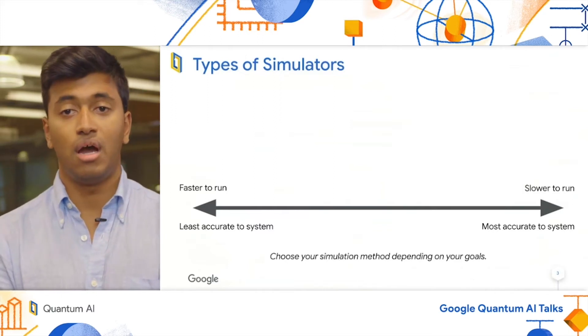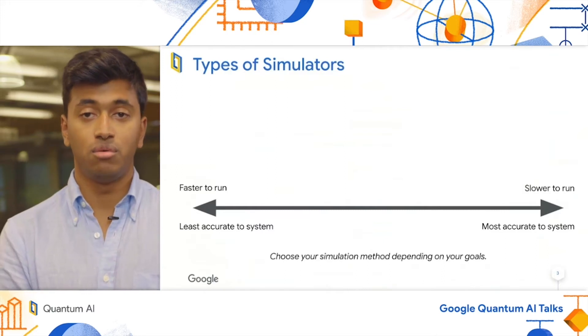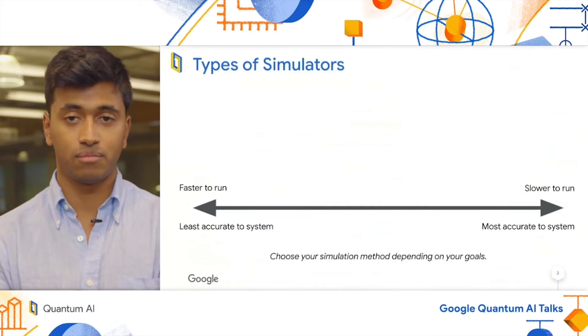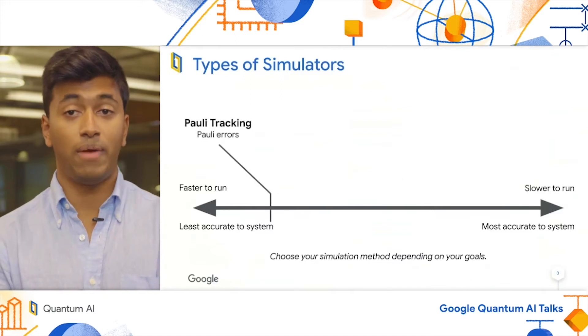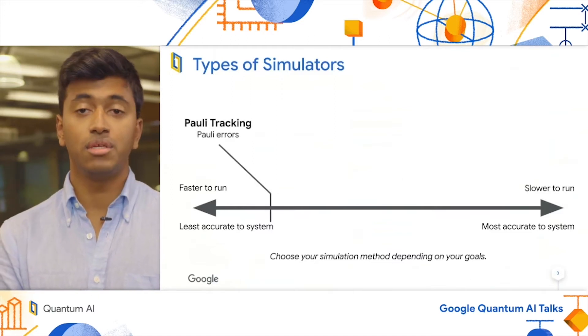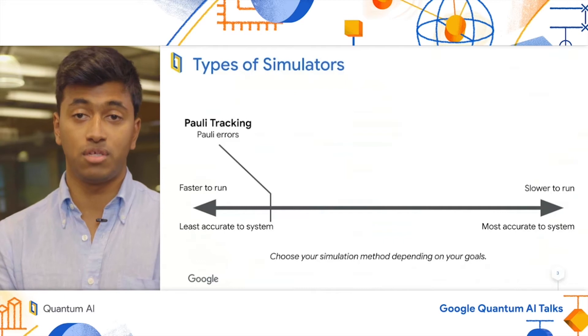Whereas on the right, I will have more involved simulations, which are both slower and match the system better. To start, we have Pauli-tracking simulations.